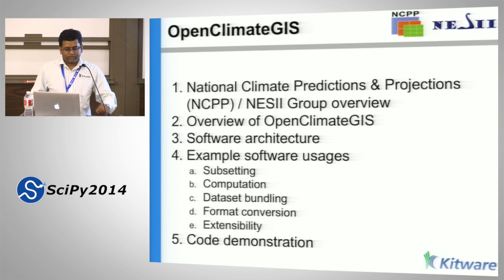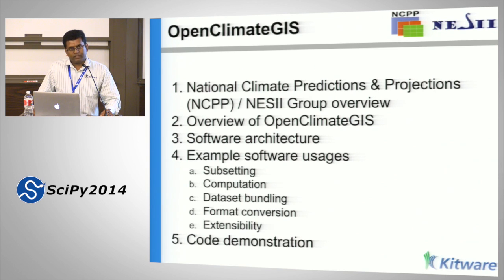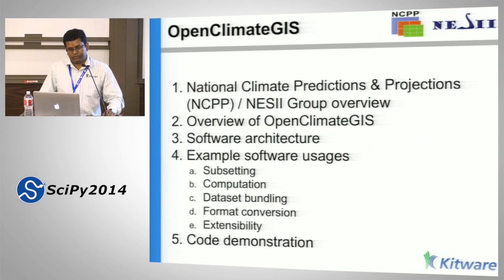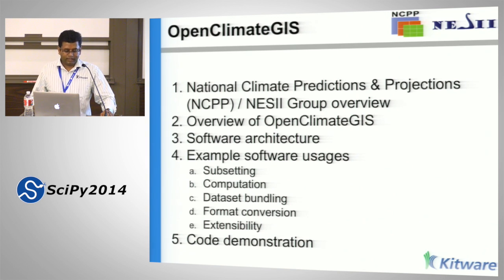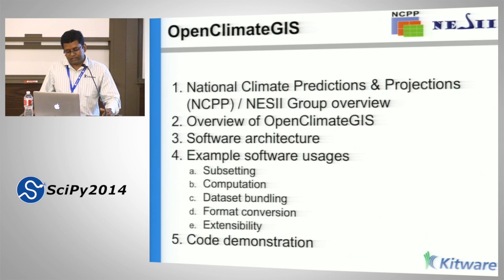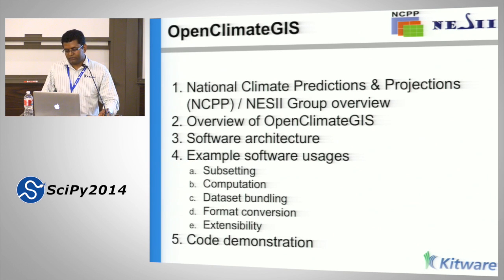Let me talk about Open Climate GIS. It's a project initiated at NOAA, and Ben Coziol is the lead developer. Open Climate GIS was created at NOAA with a focus on analysis. Some example analyses it supports are subsetting computations, dataset bundling, format conversions, and extensibility. It fits in really well with the client-based environment, which is why we use it.